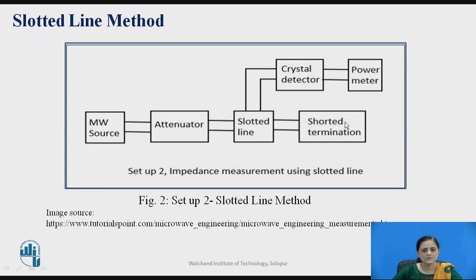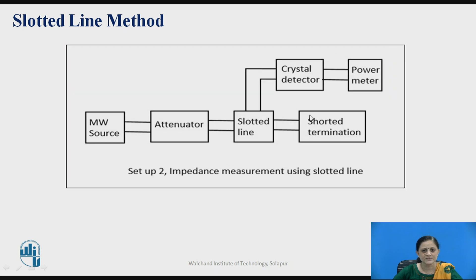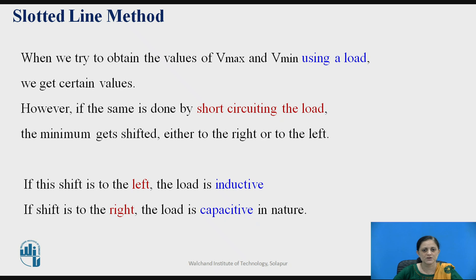In setup two of the slotted line method, the microwave source is connected, followed by the attenuator, and given to the slotted line section. The crystal detector detects the output, which is directly measured by the power meter. Unlike setup one where the unknown load is connected, here the unknown load is shorted by using a short-circuit termination at the output side. This is setup number two for the slotted line section.